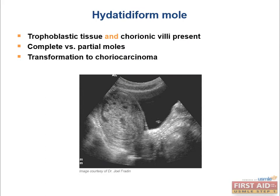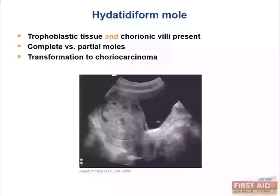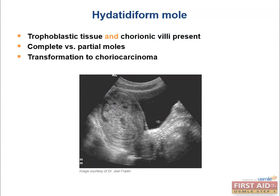In a partial mole, because we have two sperm fertilizing a normal egg, we get a resulting karyotype of 69 chromosomes: 69XX, 69XXY, or 69XYY. This is extremely important to remember because the USMLE loves asking the number of chromosomes with regard to complete versus partial mole — 46 is complete and 69 is partial.